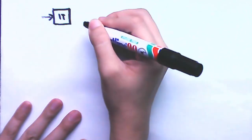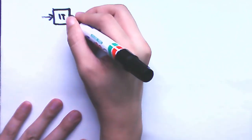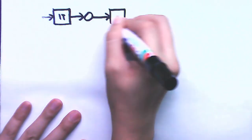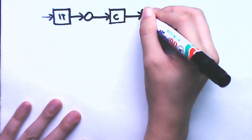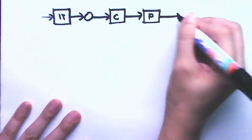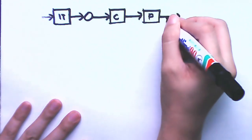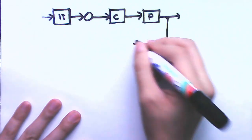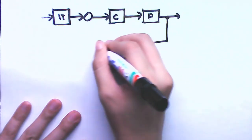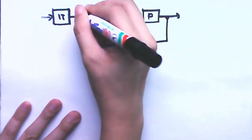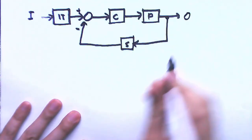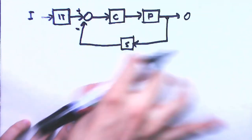Drawing first the general configuration of a closed-loop system: we have the input, then an input transducer, then a summing junction, then a controller, then a plant, then the output, and then a sensor that feeds back — negative or positive — to the summing junction. Those are our input and output, with various signals along the way.